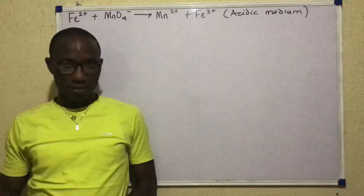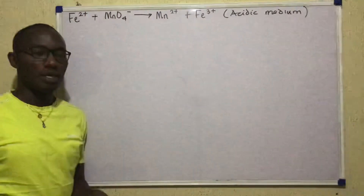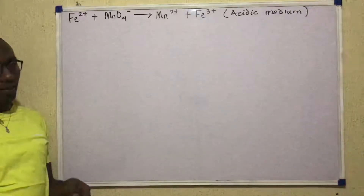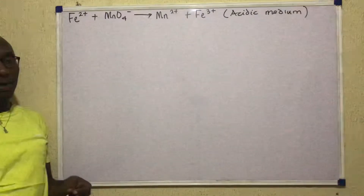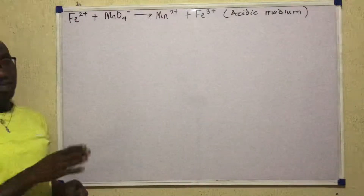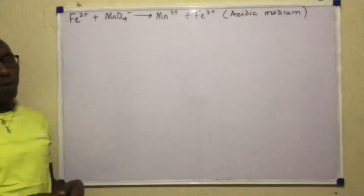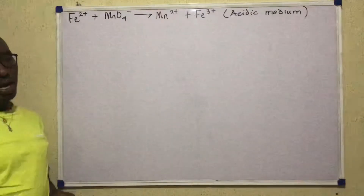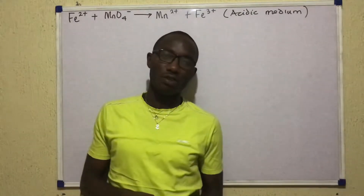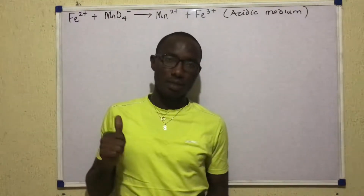Welcome to this video intended to show how to balance redox reactions using one of the two common methods — precisely the ion-electron method. It's a very easy thing to do. All you need to do is follow stepwise, although at some point you would need to have had basic knowledge of redox to be able to follow through in this study.